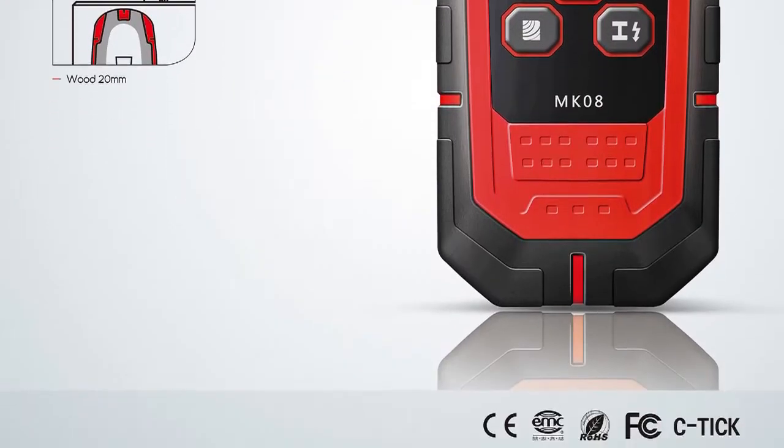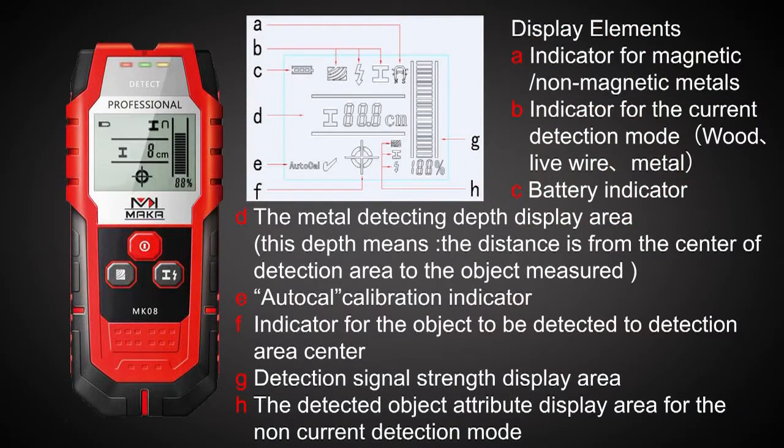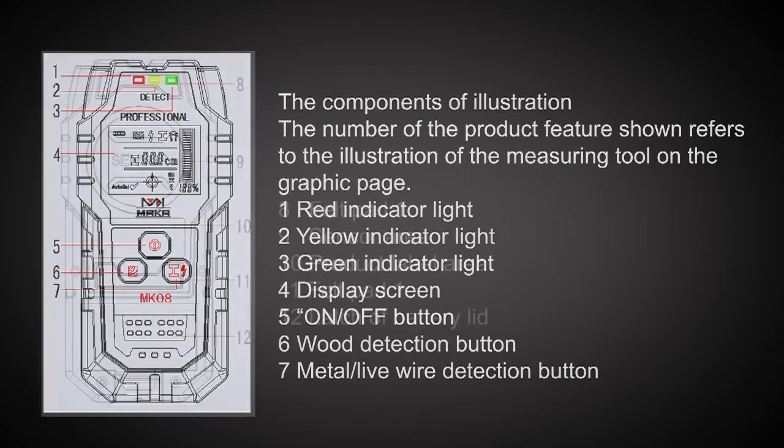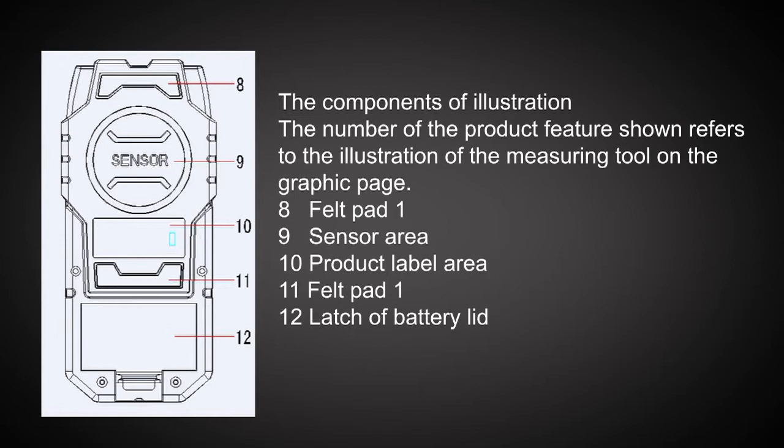The three models which are wood, electric wire, and metal can be selected easily by pressing the key. The distance from center point of detecting area to the detected metal can be calculated accurately through the detected signals graph.